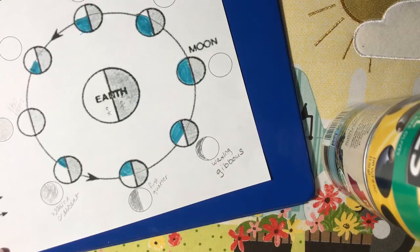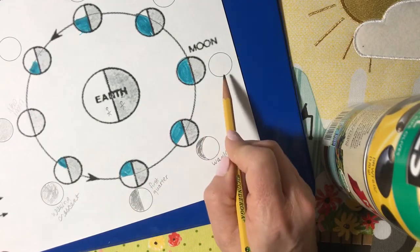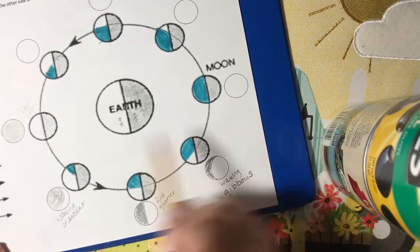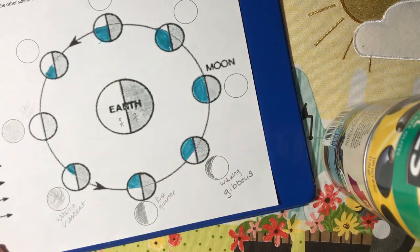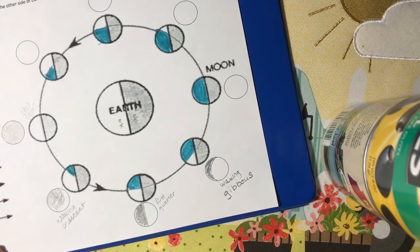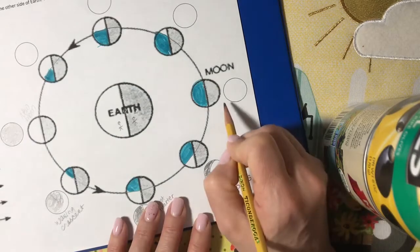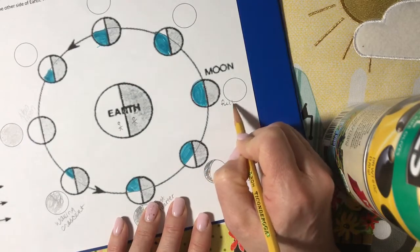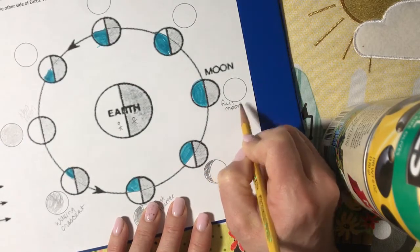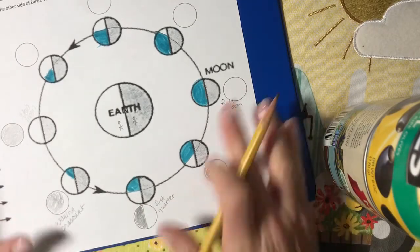So here we go. We have the waxing gibbous. And then over here, we have the full moon opposite the sun. So we're not going to shade it because that's exactly what we see, a full white circle. So that's the full moon. And again, notice it's opposite the sun.